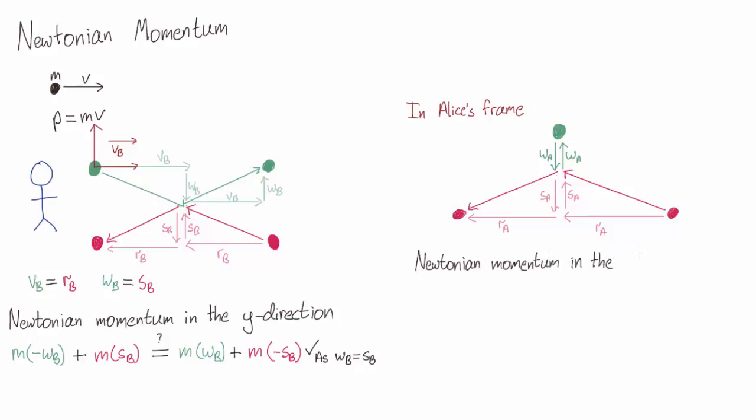Let's again look at Newtonian momentum conservation in the y direction. Before the collision, the green ball moves downwards with speed wa and the pink ball comes upwards with speed sa. Afterwards, the green ball moves upwards and the pink ball moves downwards. For Alice to see momentum conserved, she needs sa to equal wa. However, this is not the case.